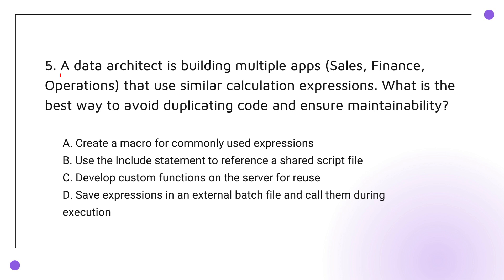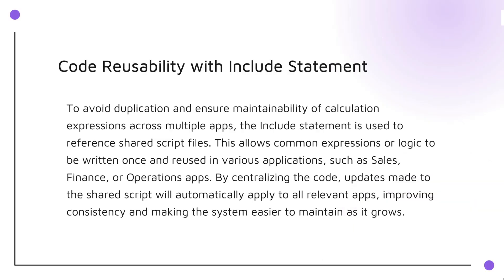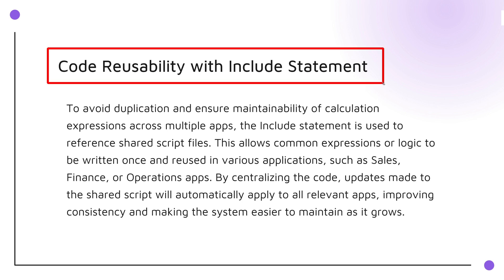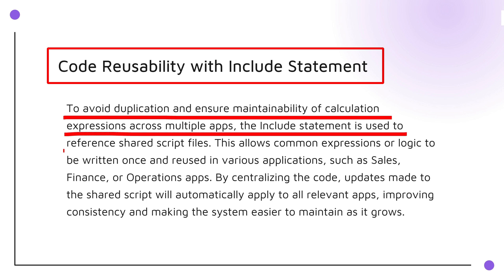Question 5: A data architect is building multiple apps that use similar calculation expressions. What is the best way to avoid duplicating code and ensure maintainability? The knowledge points are Code Reusability with the Include Statement. To avoid repeating the same code in multiple apps, use the include statement to reference shared script files. This way, you write the expressions once and they can be used across all your apps. It keeps things simple, makes updates easier, and ensures consistency.